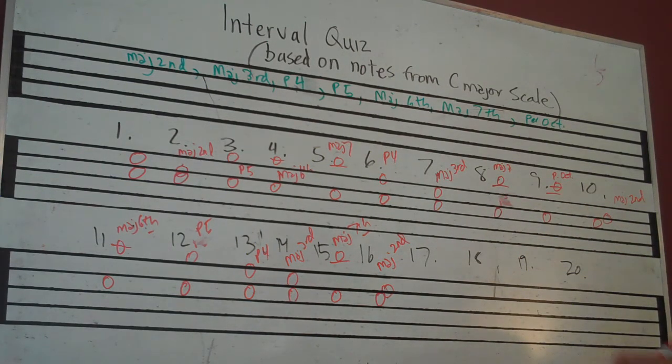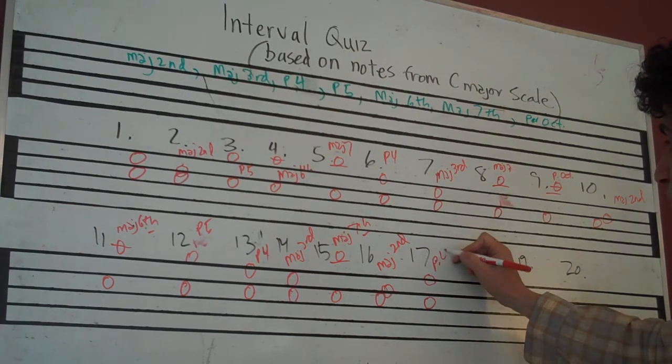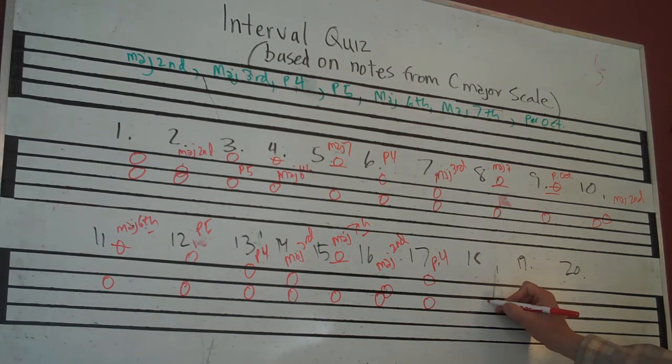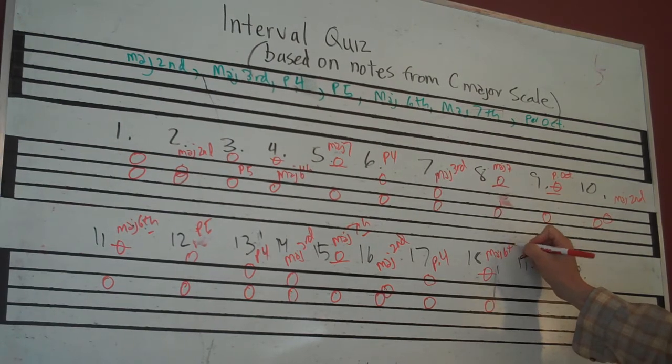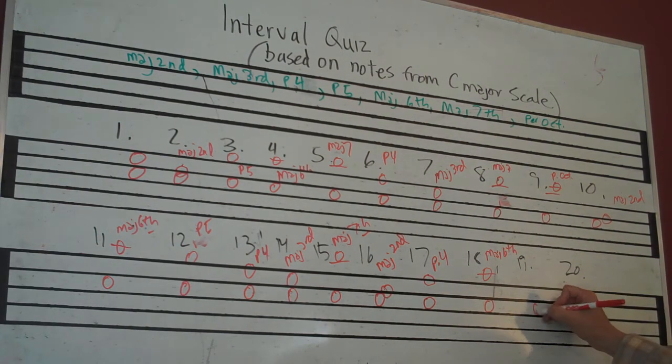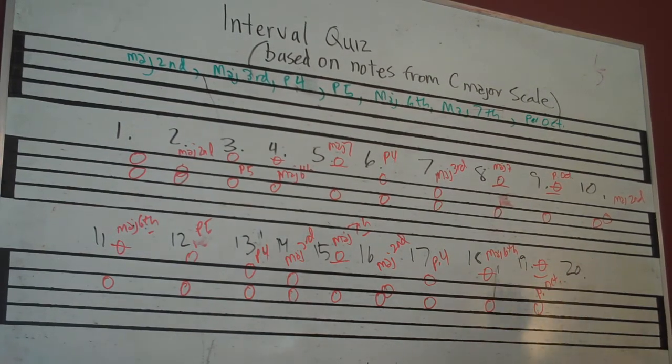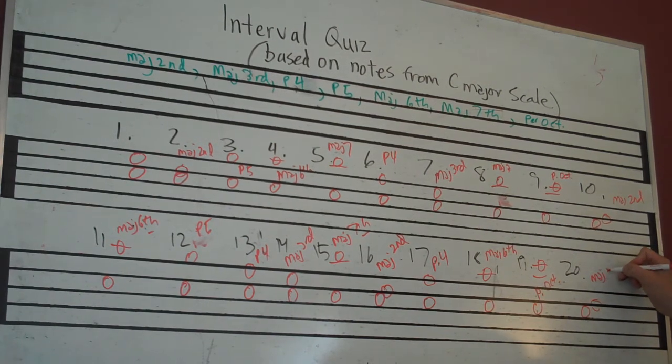Number 17 was C and F, perfect fourth. Number 18 was C and A, major sixth. Number 19 was C and C, perfect octave. Number 20 was C and D, major second.